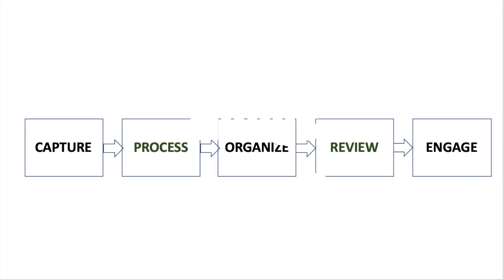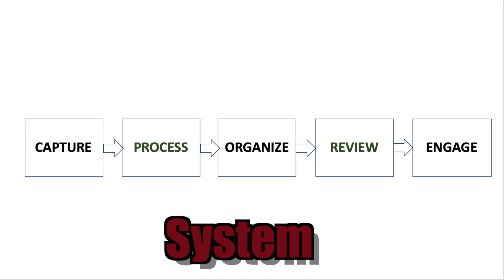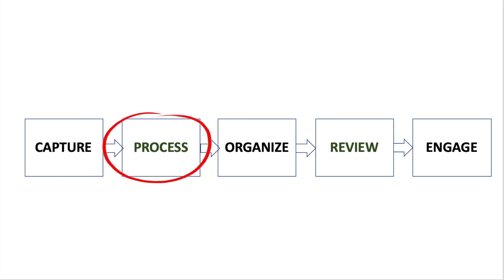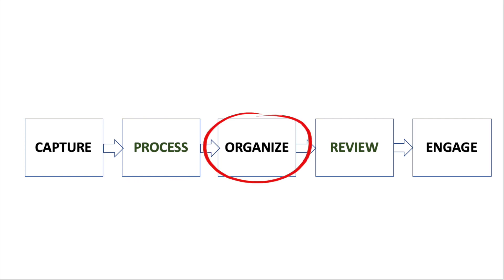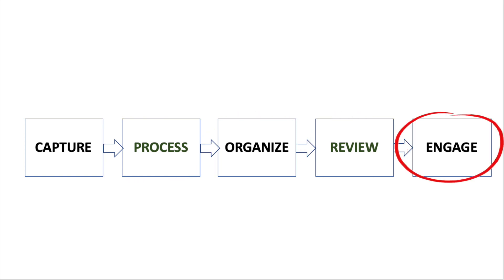The Getting Things Done system is based on five simple steps: Capture, Process, Organize, Review, and Engage.